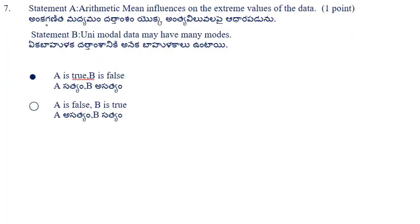Next problem: Statement A — the arithmetic mean is influenced by the extreme values of the data. The arithmetic mean depends on all values of the data and is more influenced by extreme values, so Statement A is correct. Statement B — unimodal data may have many modes. Since 'uni' means one, unimodal data has only one mode, so Statement B is wrong. Answer: A is true and B is false.